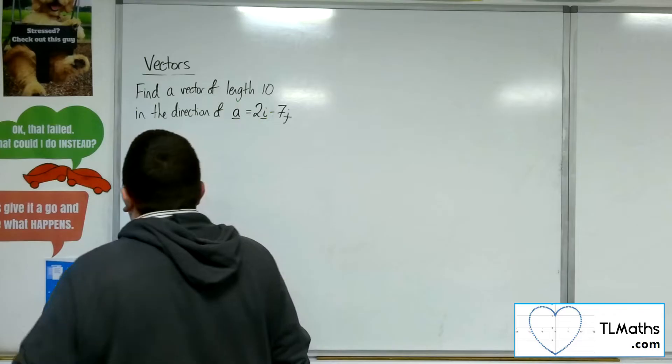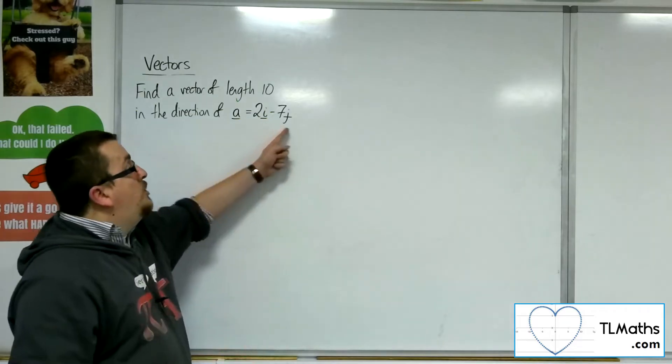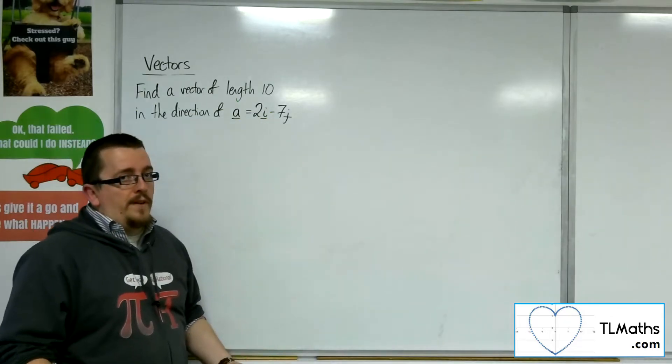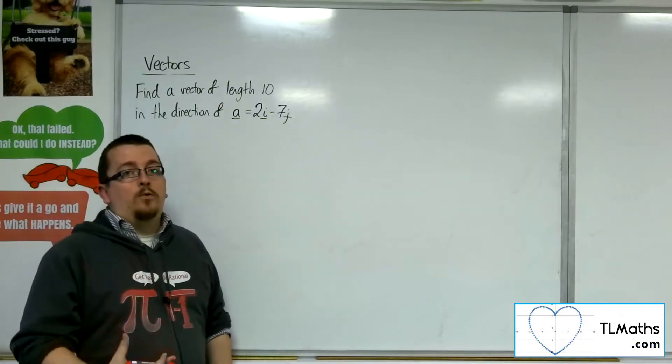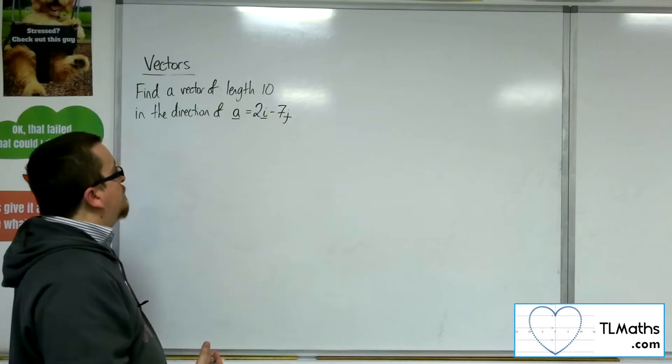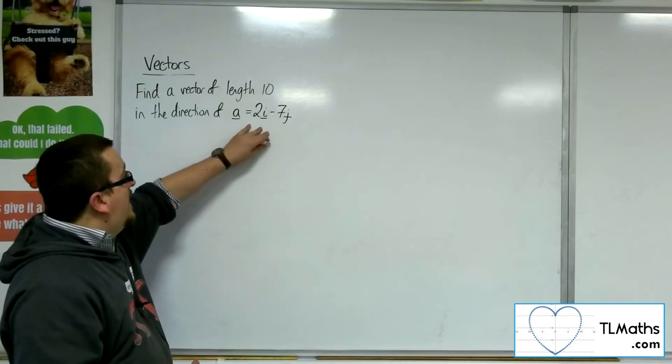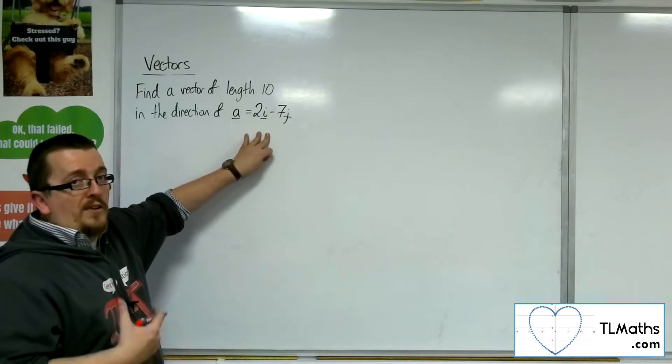A unit vector, and I and J are both examples of unit vectors. Unit vectors have magnitude or length equal to 1. Now this vector here, A, doesn't have length 1.